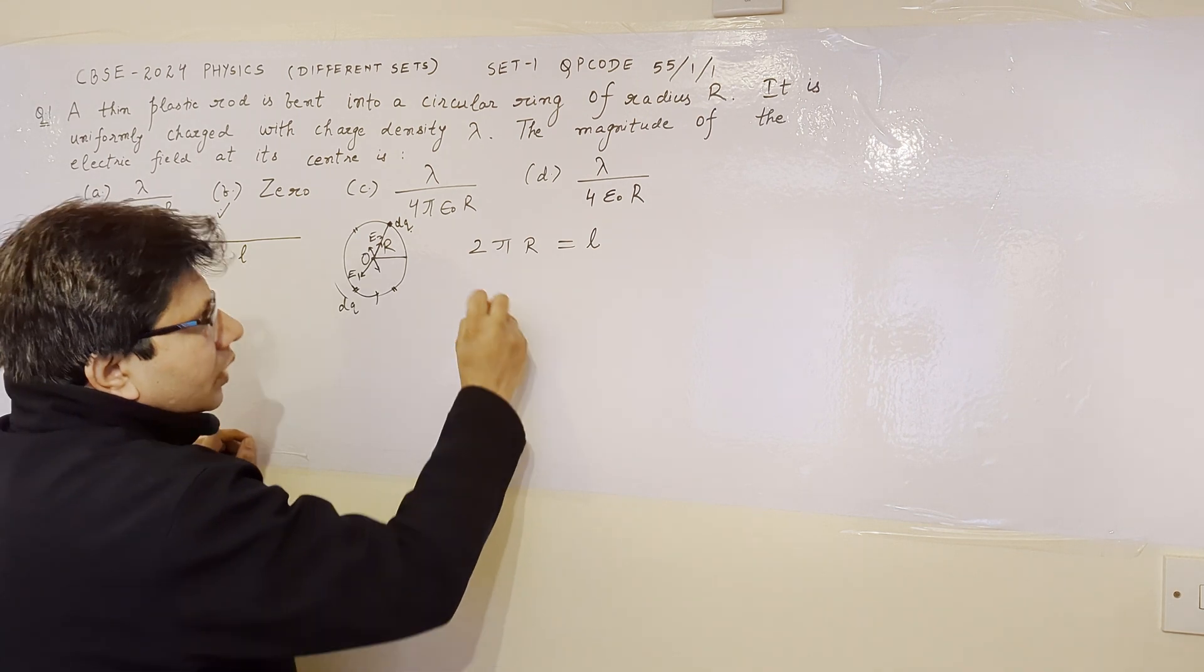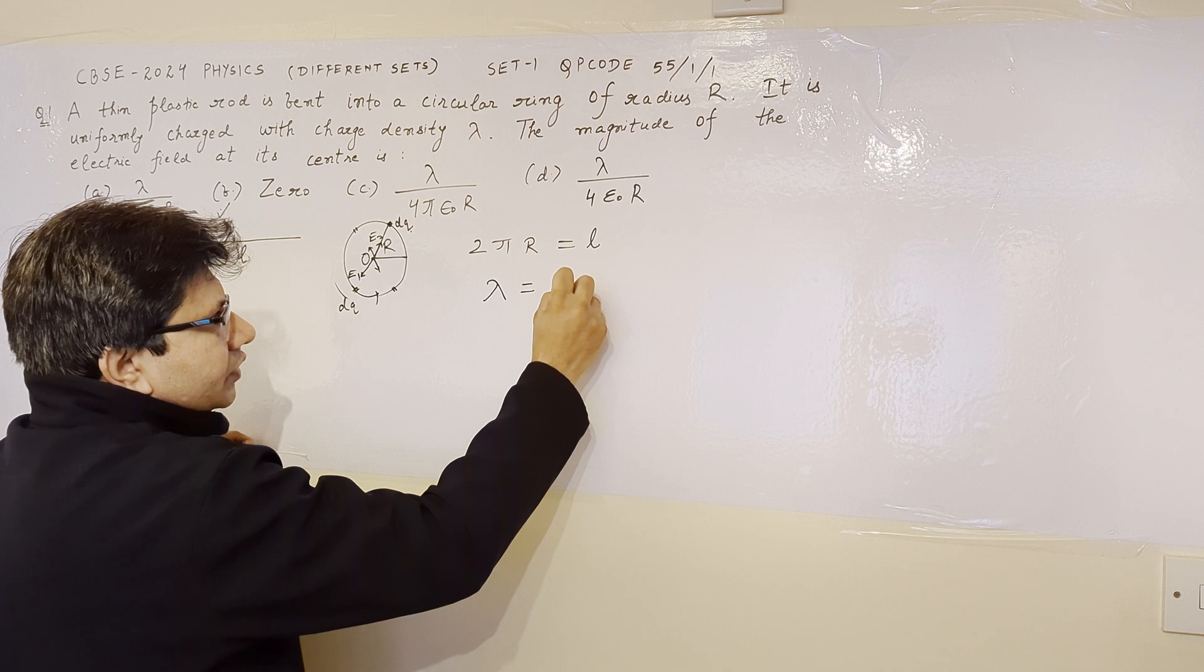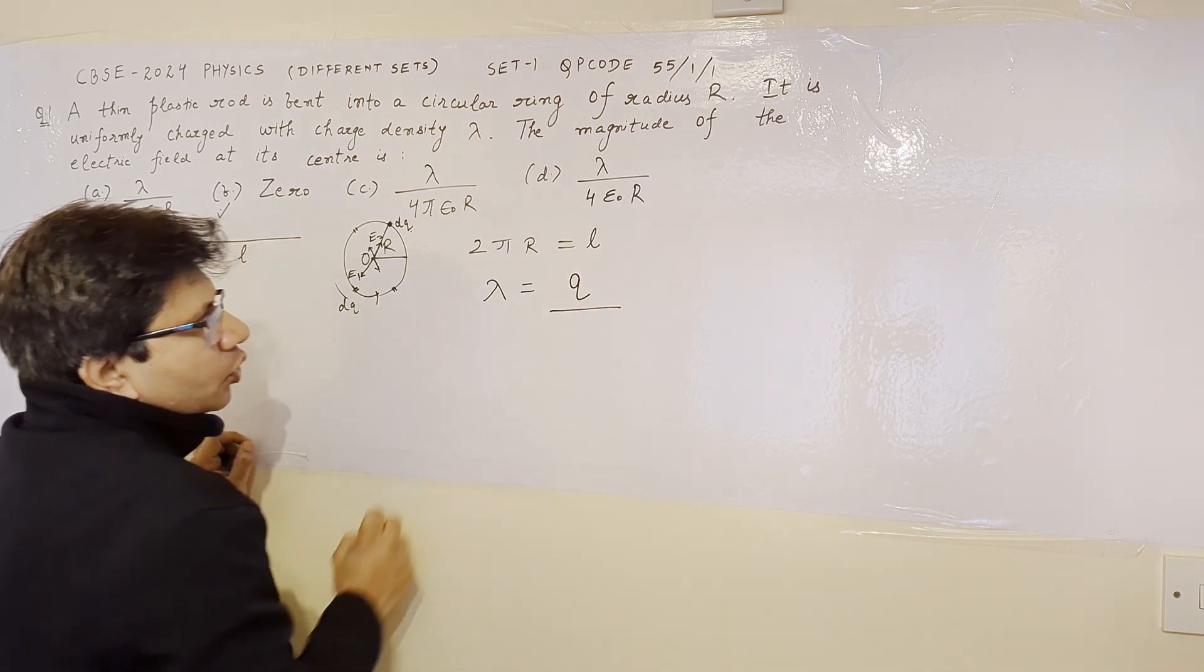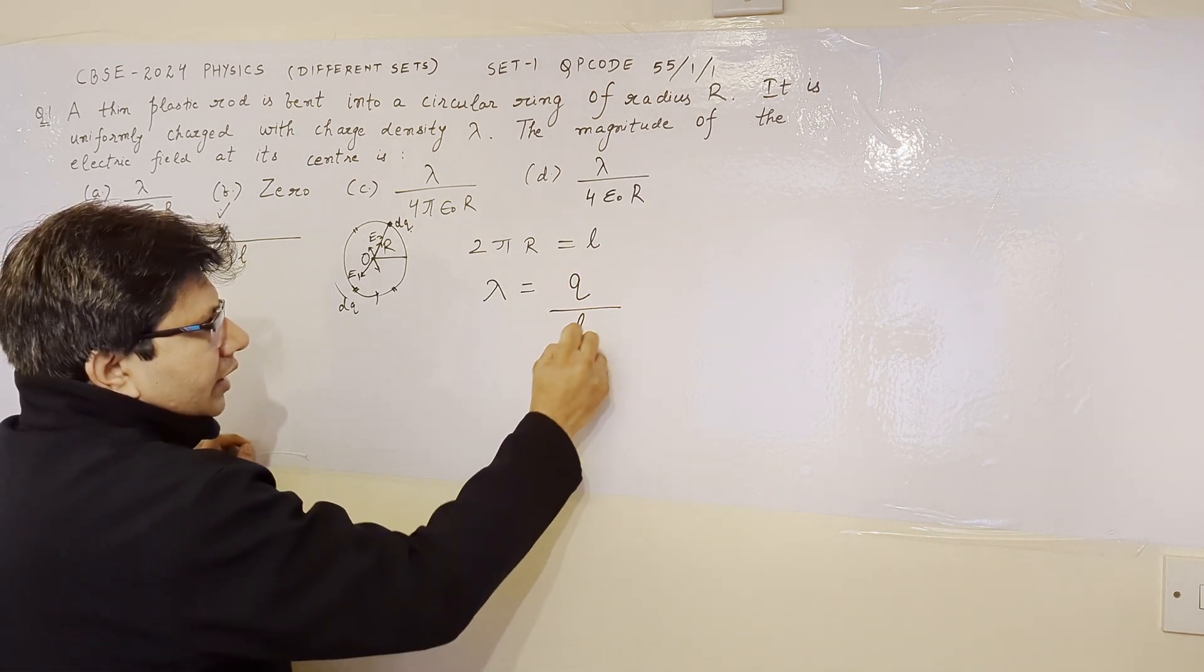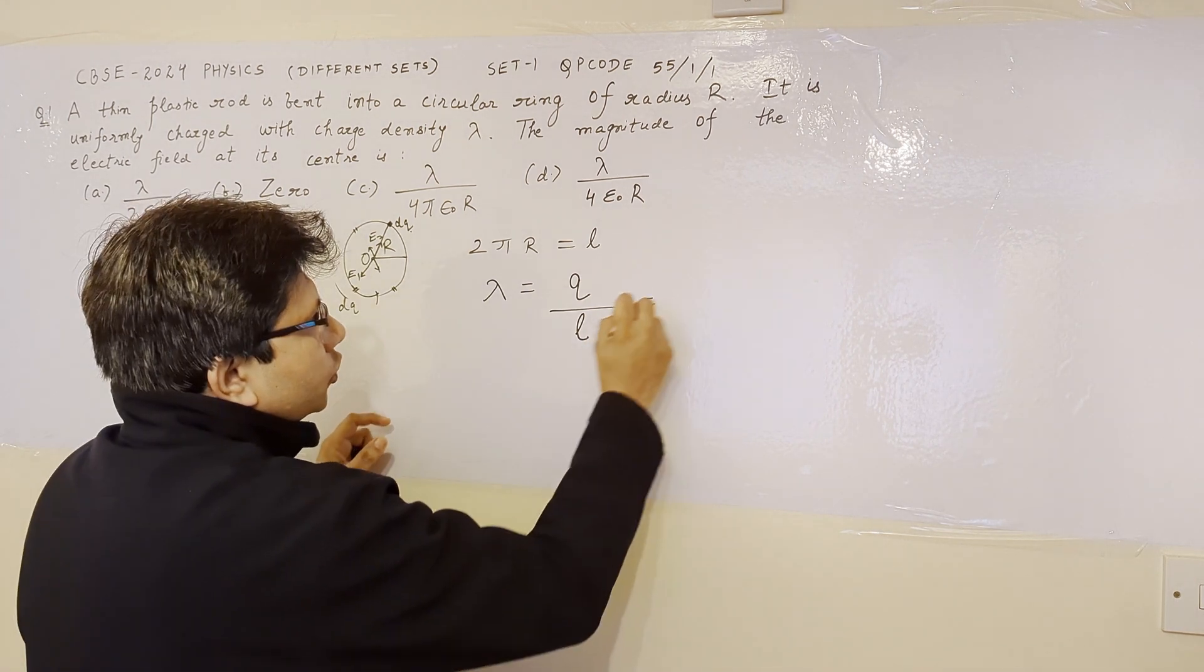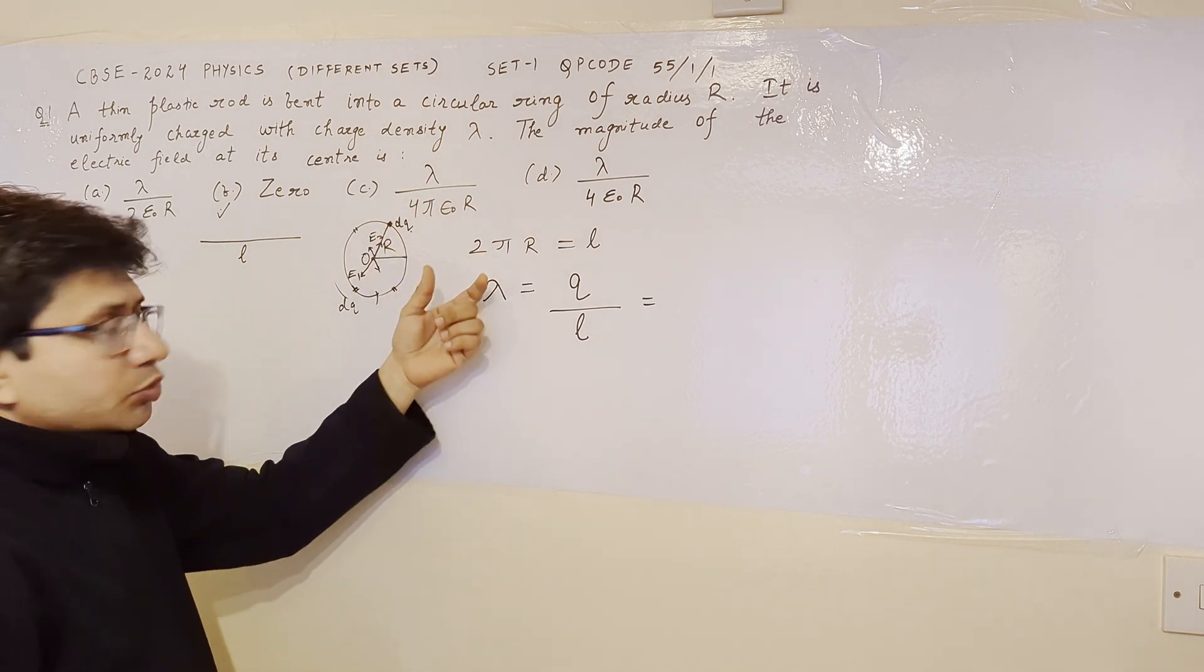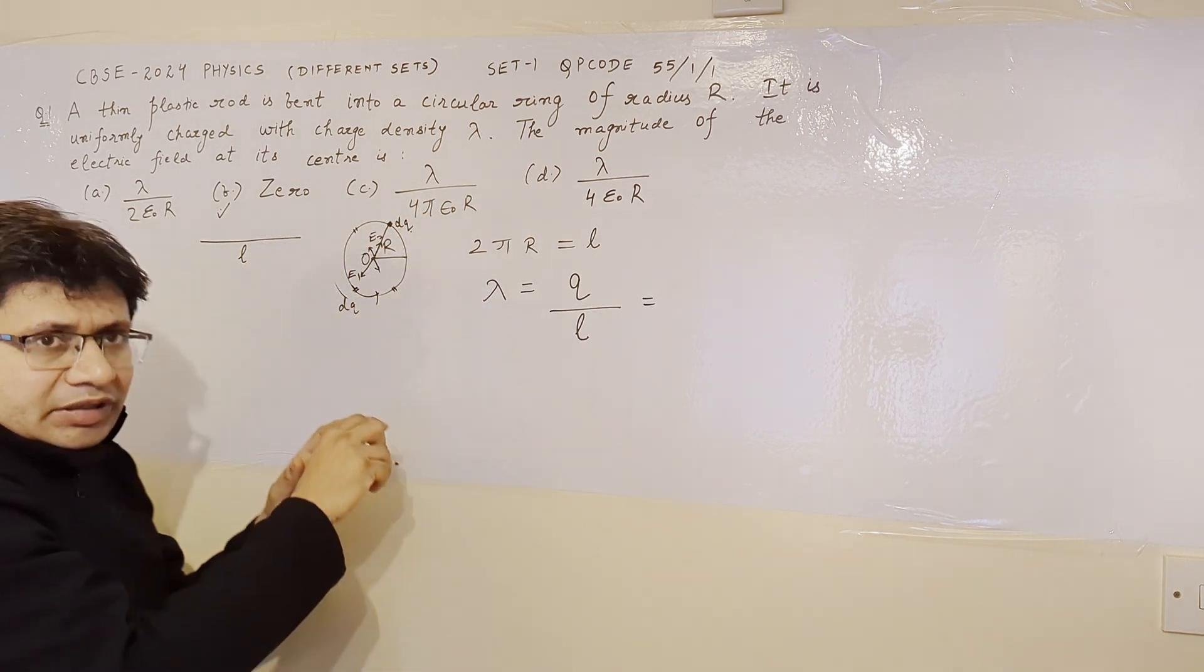It is not required in this particular problem, but we must also know that the linear charge density is given by the charge upon the total length. In this particular case, lambda is equal to q, where q is the total charge. The value is not provided because it is not needed in this problem because there is a kind of symmetry.